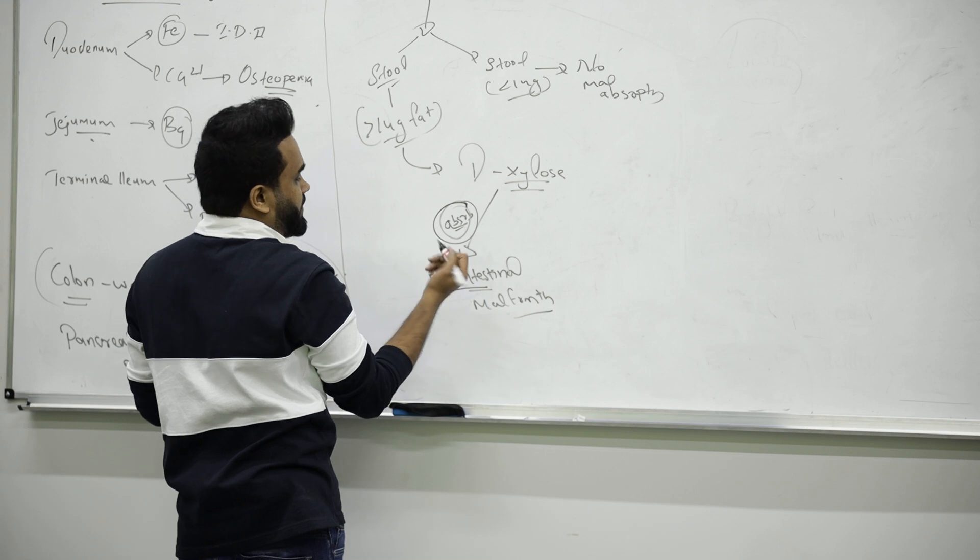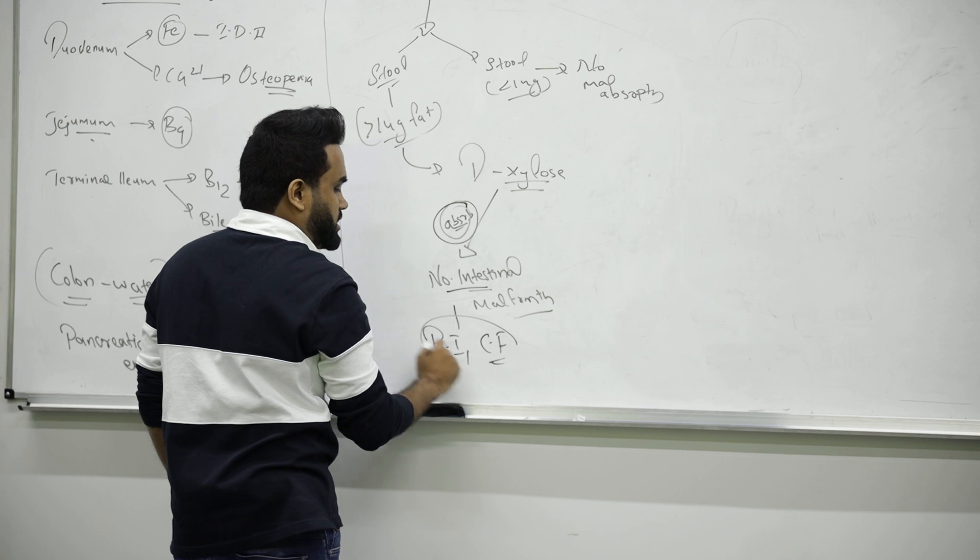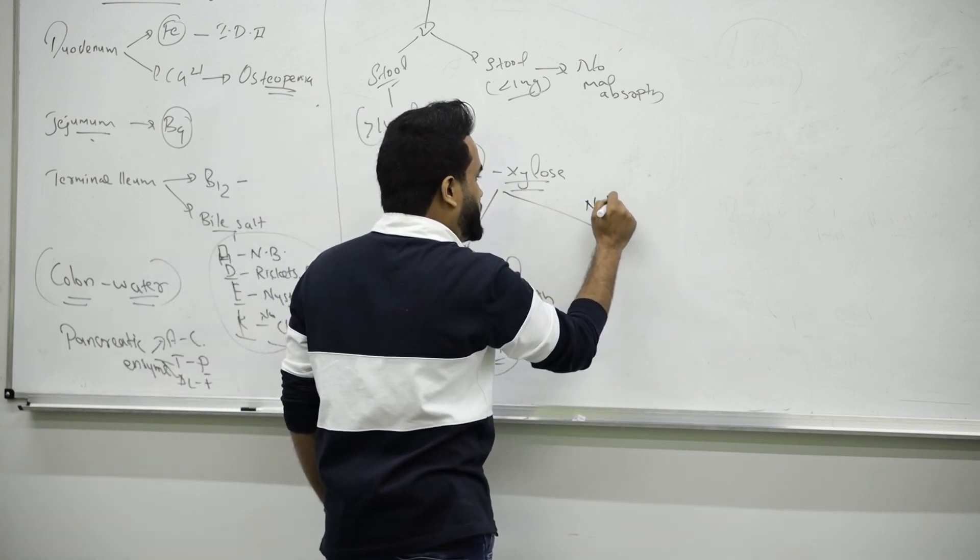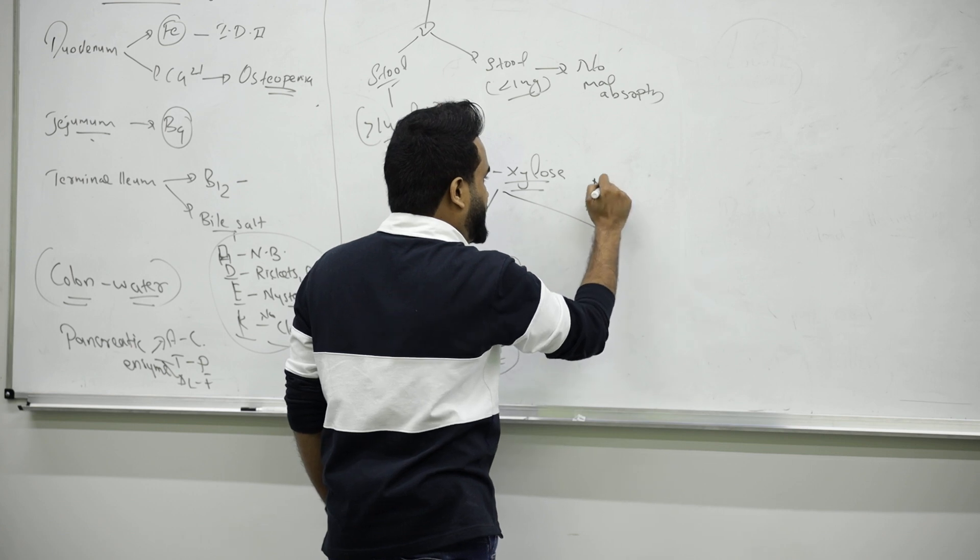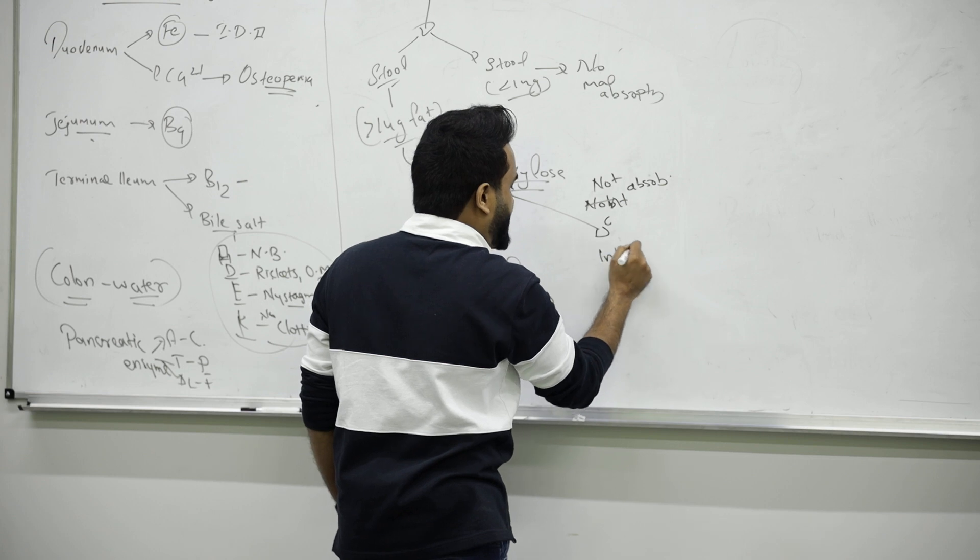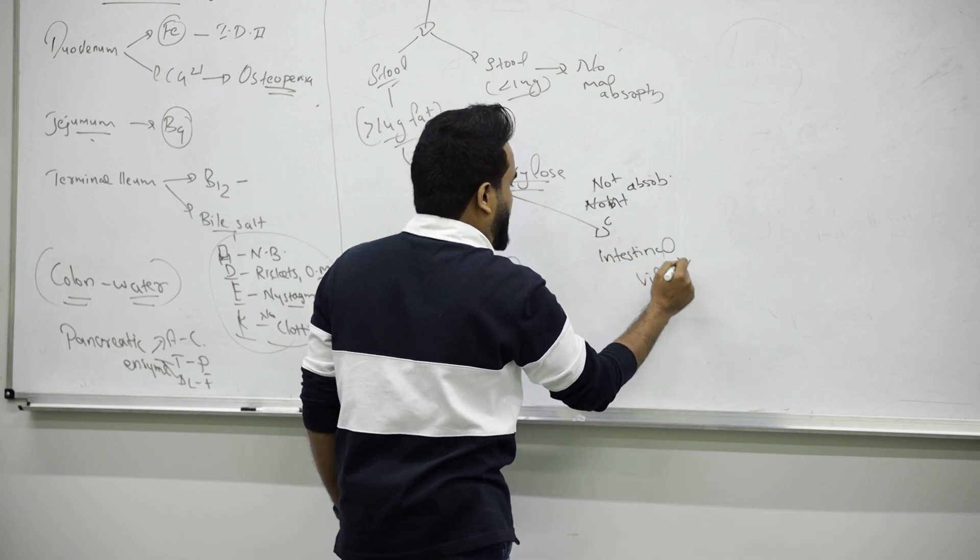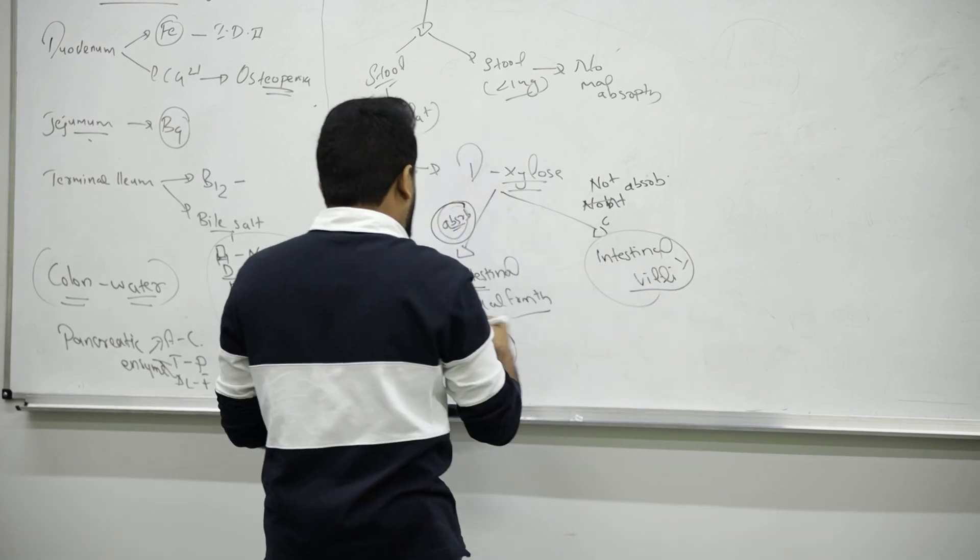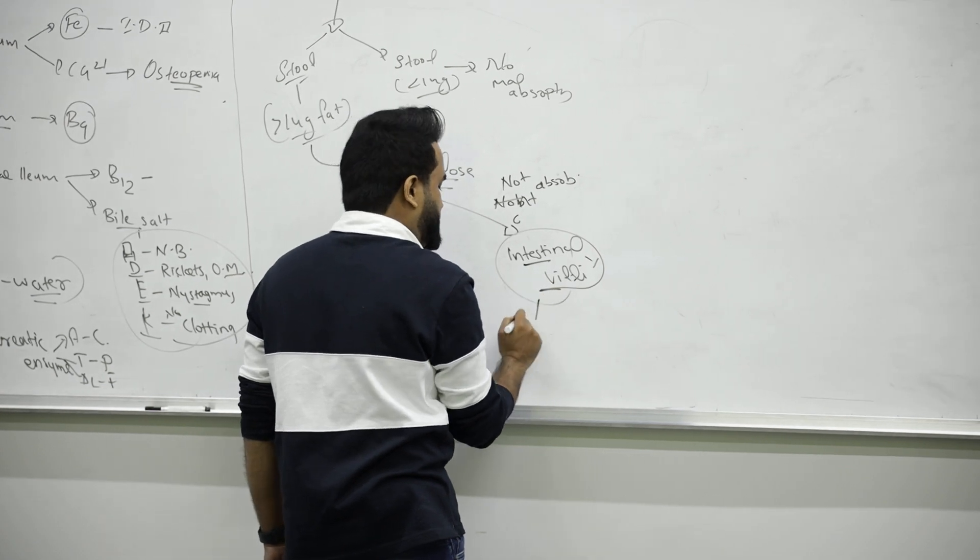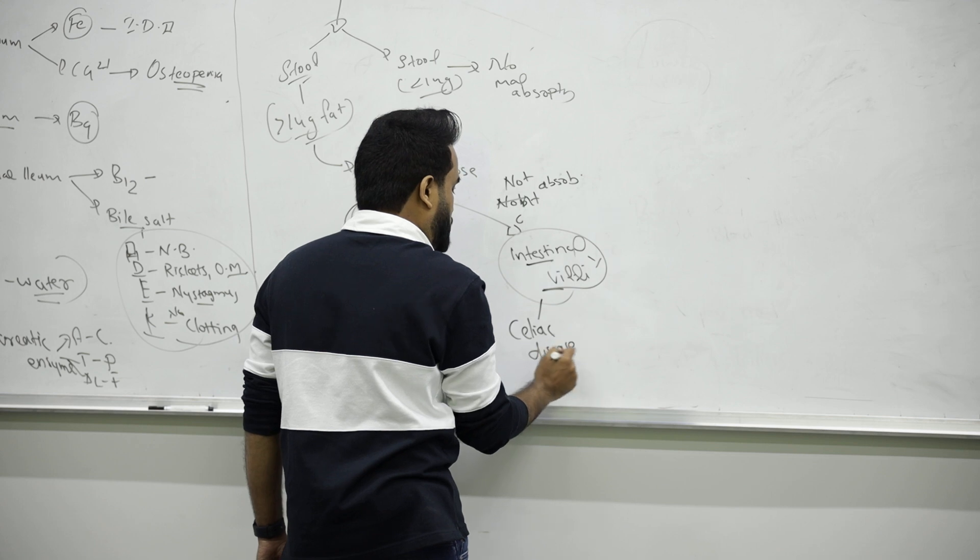Then other problems will be pancreatic insufficiency or cystic fibrosis, something like that. But if D-xylose is not absorbed, we confirm surely there is a problem in intestinal villi or problem in absorbing in the intestine. That type of disorder we can confirm is called malabsorption because of intestinal issues. We have different diseases like you might have heard about celiac disease, tropical sprue, or Whipple sprue.